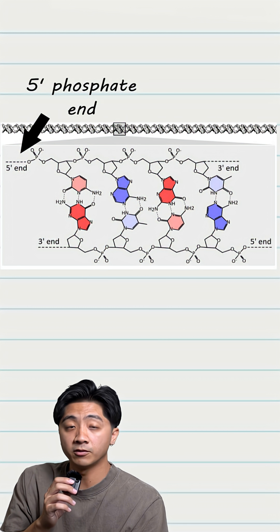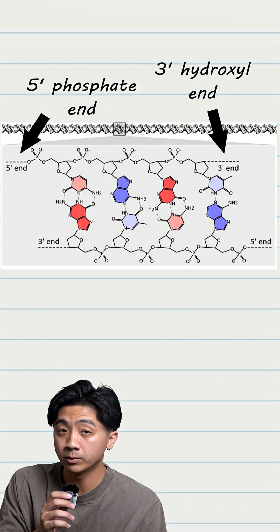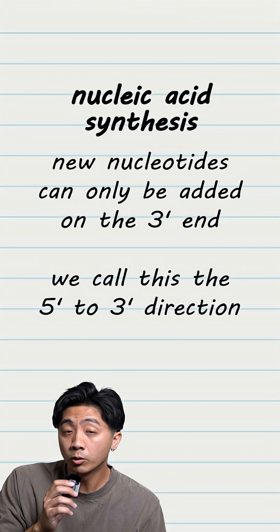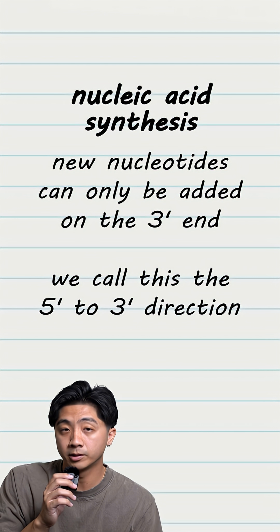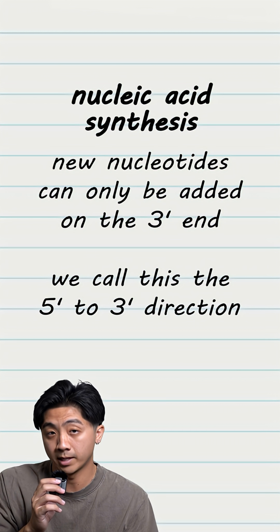On a nucleic acid, there is a 5' phosphate end and a 3' hydroxyl end. When adding more nucleotides, you can only add nucleotides on the 3' end.